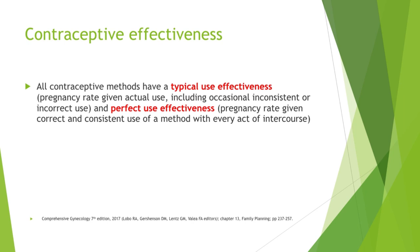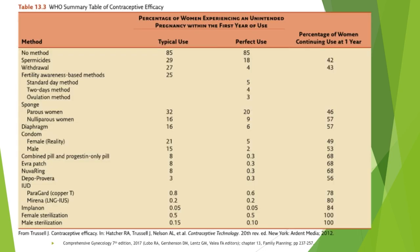In other words, perfect use effectiveness is the failure rate when the patient or couple use the contraceptive method perfectly. Pregnancy rates can vary widely between typical and perfect use depending on how complicated it is to use a method perfectly. In general, coitus-related methods and more user-dependent methods are less effective than forgettable methods such as the long-acting reversible contraceptives, like DMPA or surgical sterilization.